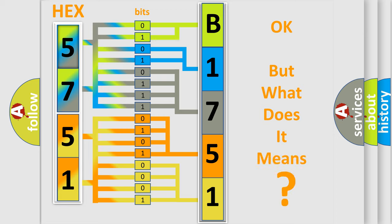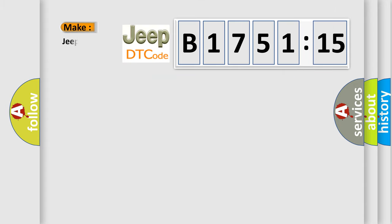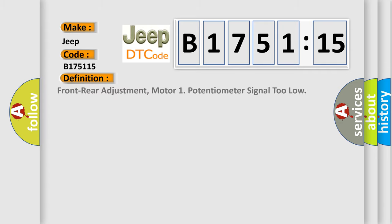We now know in what way the diagnostic tool translates the received information into a more comprehensible format. The number itself does not make sense to us if we cannot assign information about what it actually expresses. So, what does the diagnostic trouble code B175115 interpret specifically for Jeep car manufacturers?